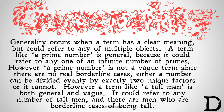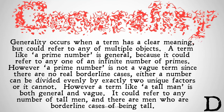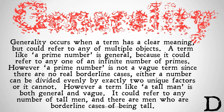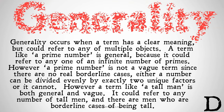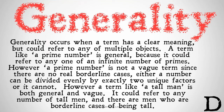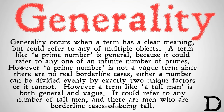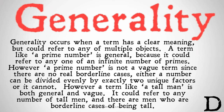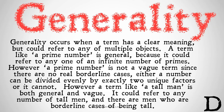Generality, on the other hand, occurs when a term has a clear meaning but could refer to any number of multiple objects. A term like 'a prime number' is general because it could refer to any one of an infinite number of primes. However, a prime number is not vague, since there are no real borderline cases — either a number can be divided evenly by exactly two unique factors, or it cannot.